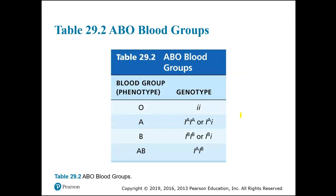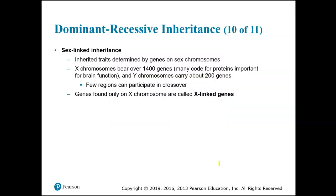So, blood groups: if you're type O your genotype is little i, little i. If you're type A you can have either of two genotypes. If you're type B you can have either of two genotypes. And if you're type AB, you're going to have IAIB. We're not going over whether you're positive or negative, but that's also inherited — it's kind of separate.